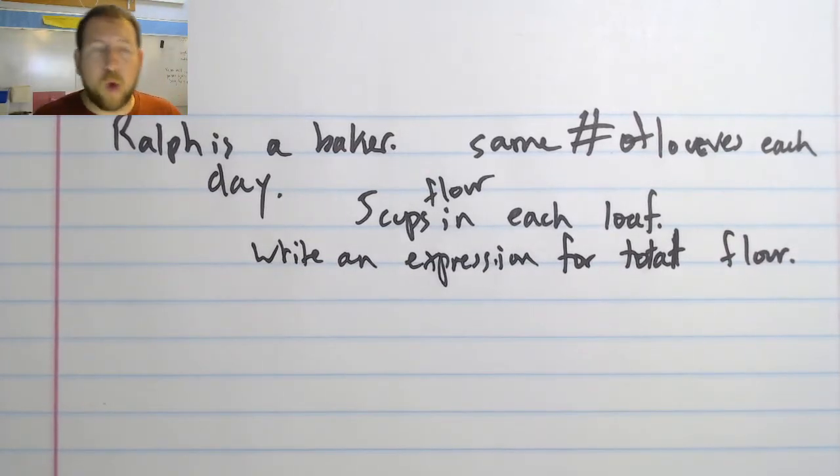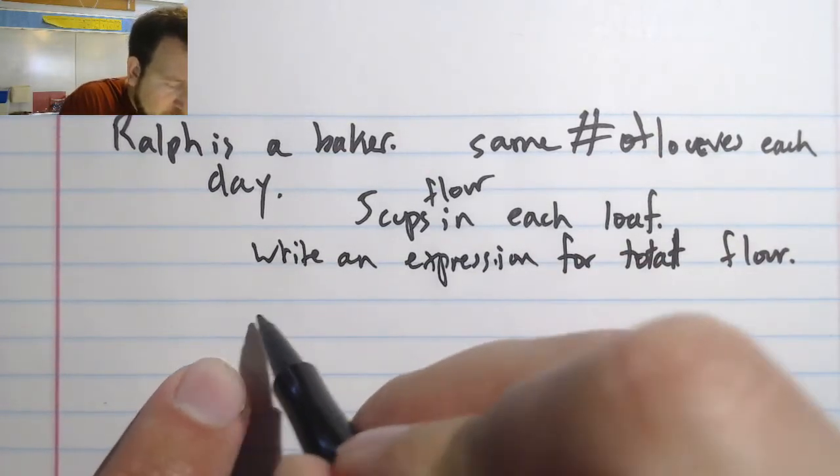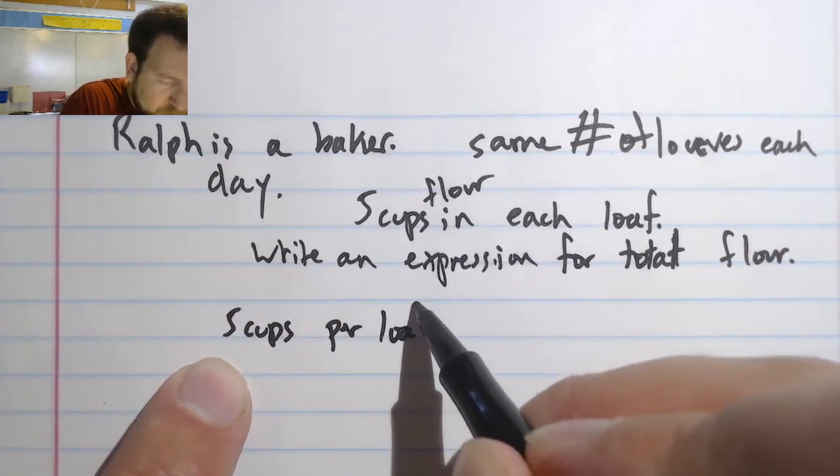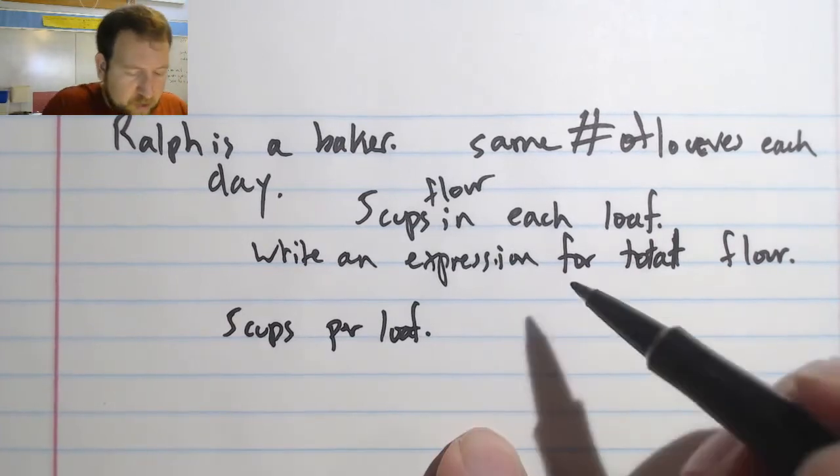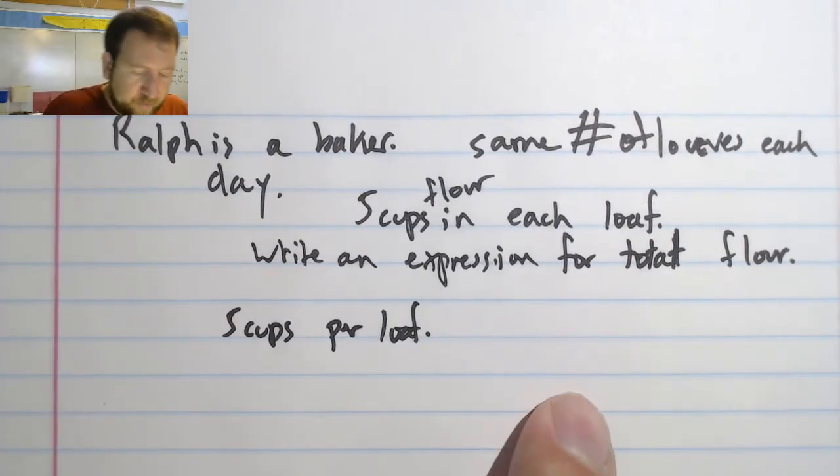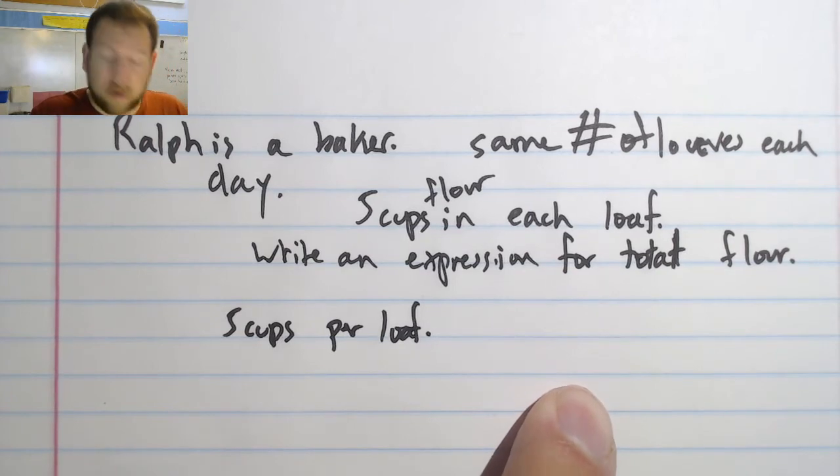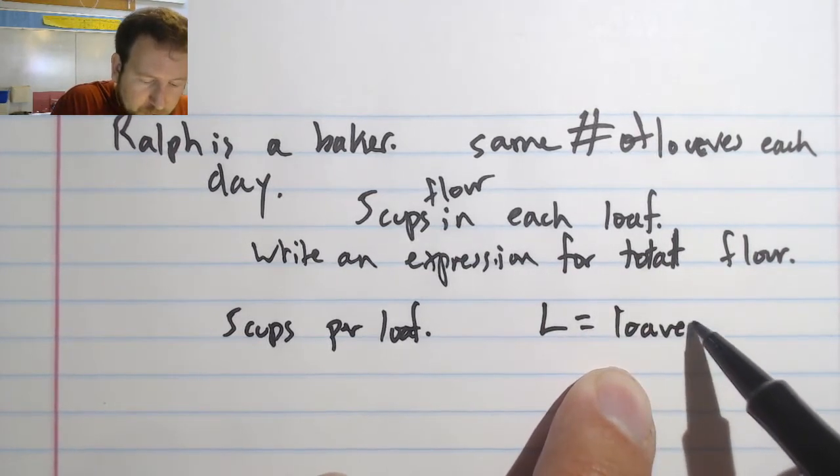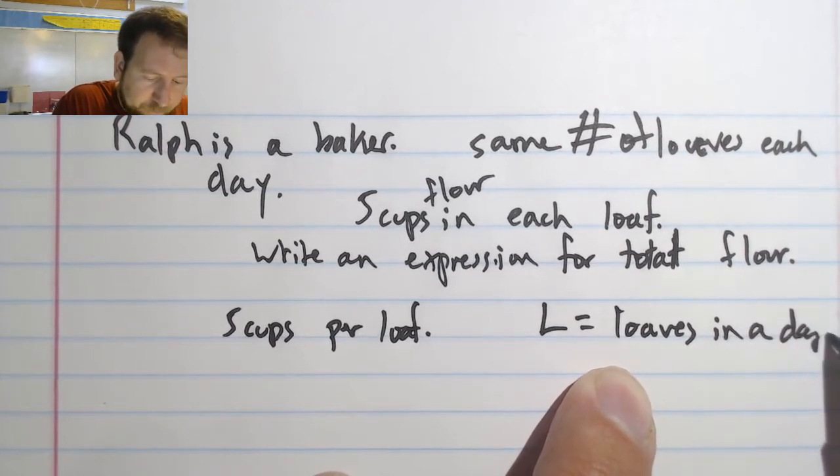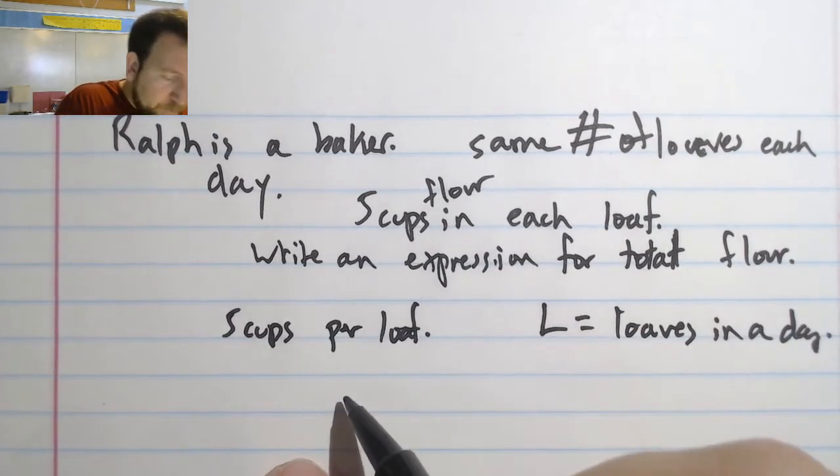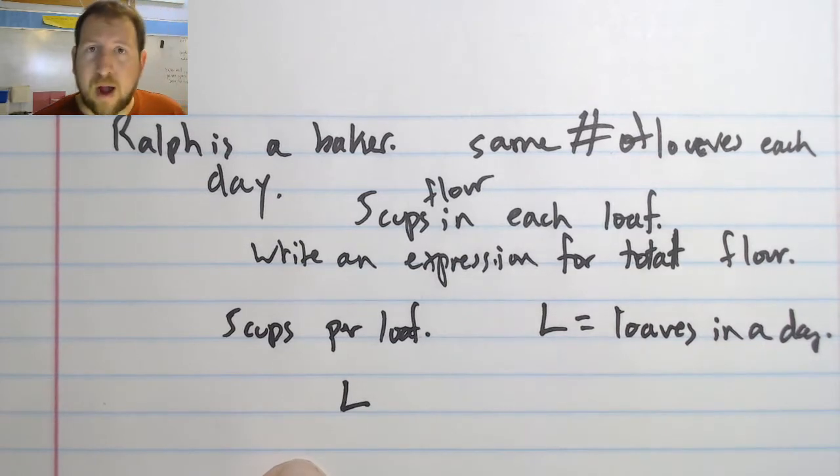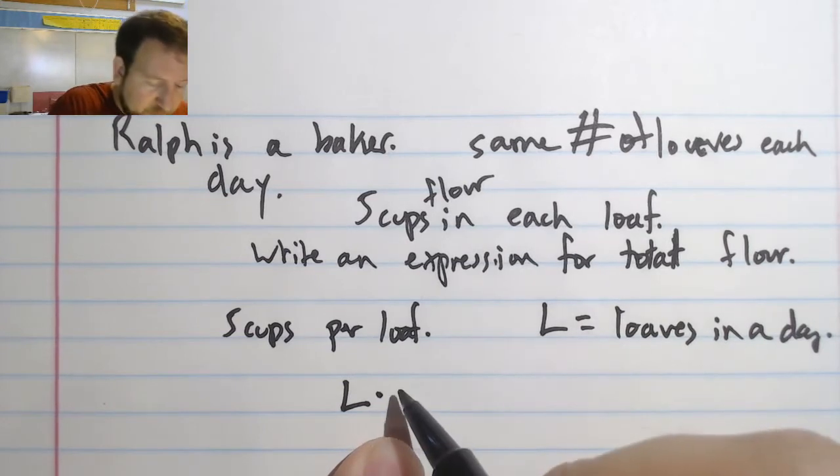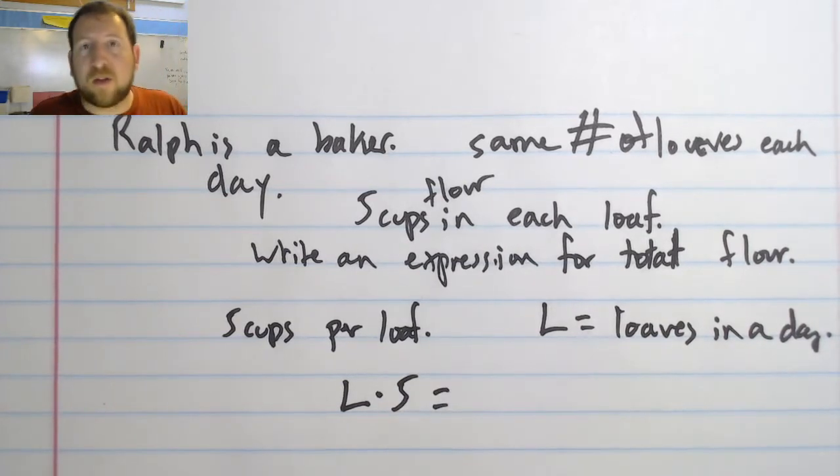First I have to figure out what I know. I know that we have 5 cups per loaf, but I don't know how many loaves are going to be made. So I can say that L is going to represent the number of loaves that are made. So L = loaves in a day. For every loaf I know that I need to have 5 cups of flour, so that means L × 5 is going to give me total cups of flour.